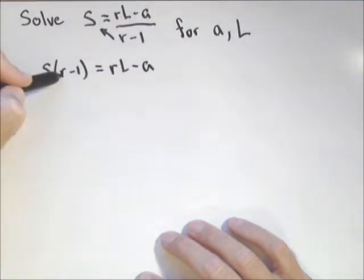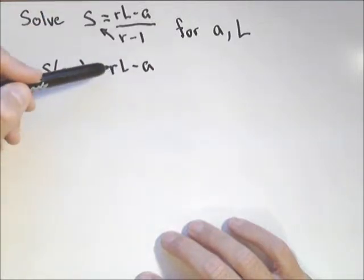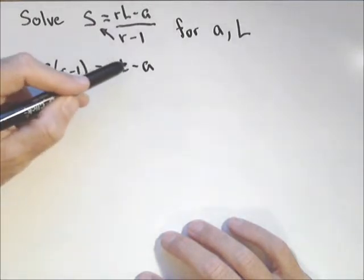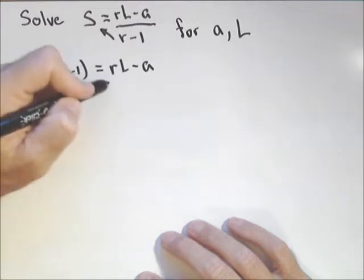Our previous goal was to solve for r. Now, we're gonna solve for A, and then we're gonna solve for L. To solve for A, we've almost got it. We could actually subtract off r L from both sides.